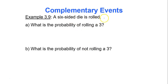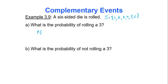A six-sided die is rolled. When I roll a six-sided die, what would my sample space be? What are all of my possible outcomes? Well, anything from one to six. So what is the probability of rolling a three? The probability of rolling a three: there are six possible outcomes in my sample space, and only one of them is three. So the probability is one out of six.